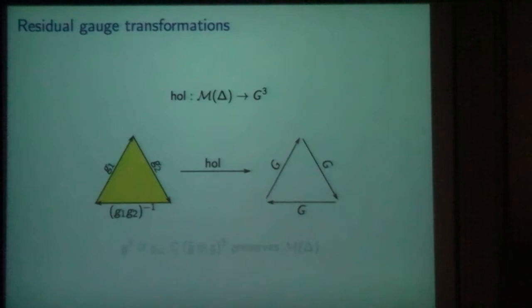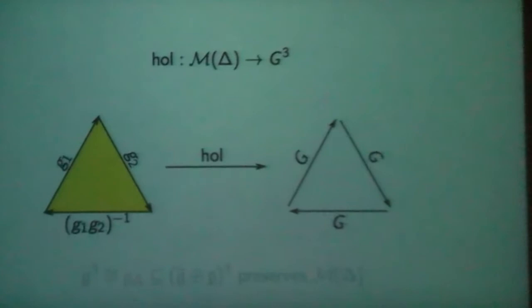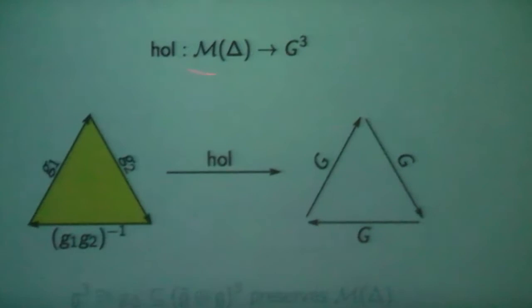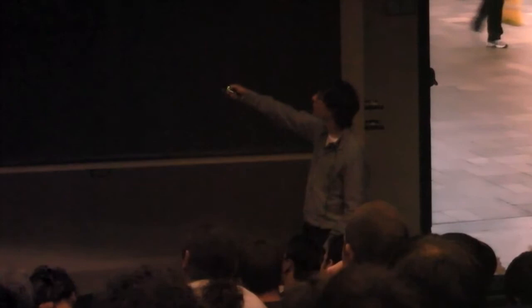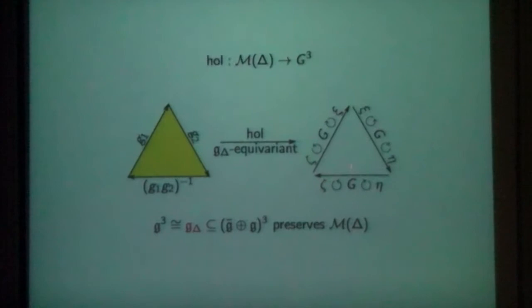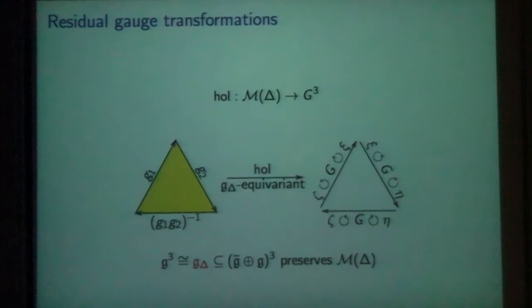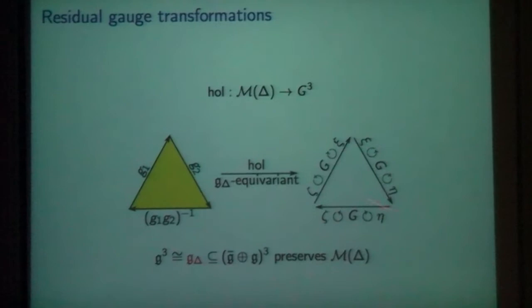I have to remember what gauge transformations I haven't used yet — the residual gauge transformations. I have this embedding of my moduli space of the triangle into three copies of the structure group, one holonomy per edge. On each edge I've got some residual gauge transformations, but I'm interested in the residual gauge transformations for the moduli space of the triangle. If I act at a vertex of the triangle, I have to act on both edges across that vertex. So the residual gauge transformations are three copies of the Lie algebra embedded diagonally across each vertex, and the moduli space is equivariant with respect to the residual gauge algebra of the triangle, which is generated by G-delta.